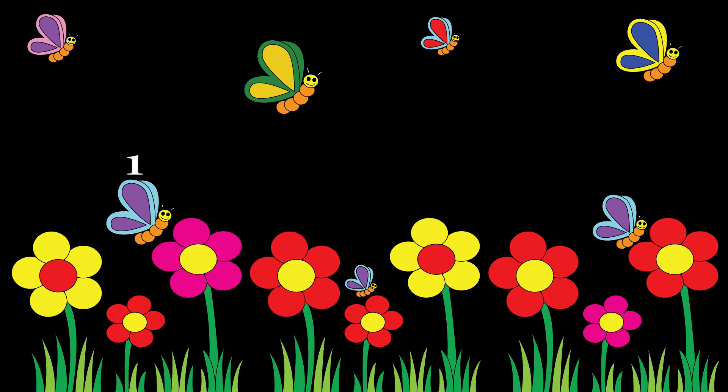And now the second question: how many butterflies are closest to the flowers? There are a lot of butterflies here, but the question is how many are closest to the flowers? So let's count them: one, two, three. There are three butterflies closest to the flowers.